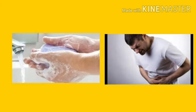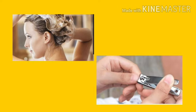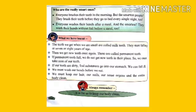So we must not forget to wash our hands before we begin to eat. Just as it is necessary to keep our teeth clean, it is important to keep our hair and nails clean too. We must also keep our sensory organs clean. We must bathe every day and wash our hair at least once a week. Everyone brushes their teeth in the morning, but the smartest people brush their teeth before they go to bed every single night too. Everyone washes their hands after a meal, and the smartest wash their hands without fail before a meal too.